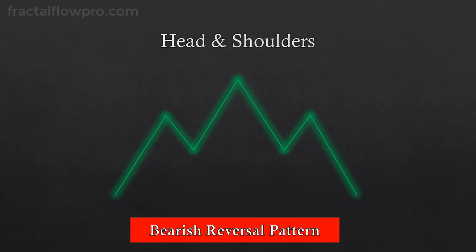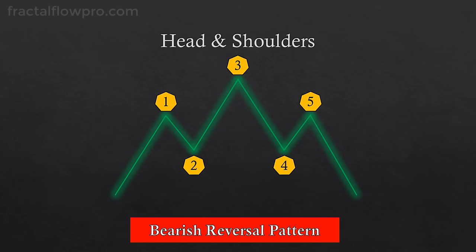There are a few important elements in a head and shoulders pattern. We have the shoulders, highlighted by numbers 1 and 5. The head, highlighted by number 3. And the neckline, highlighted by the line connecting numbers 2 and 4. This chart pattern receives this name because the price action will resemble the shape of head and shoulders. The logic behind the pattern is that price action will make a downward turn by failing to produce a higher high in number 5, meaning that price will reach a peak in number 3 and a failed attempt to surpass number 3 in number 5. All of this means that sellers are gaining power as buyers exhaust their energy.